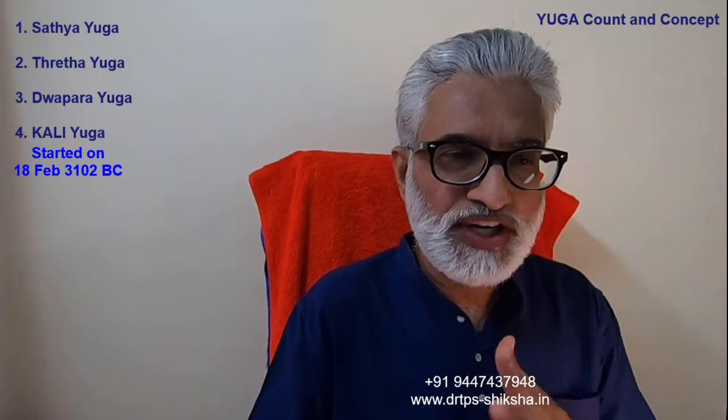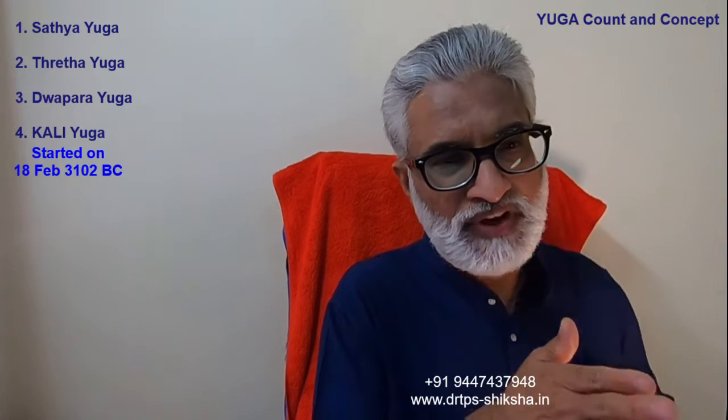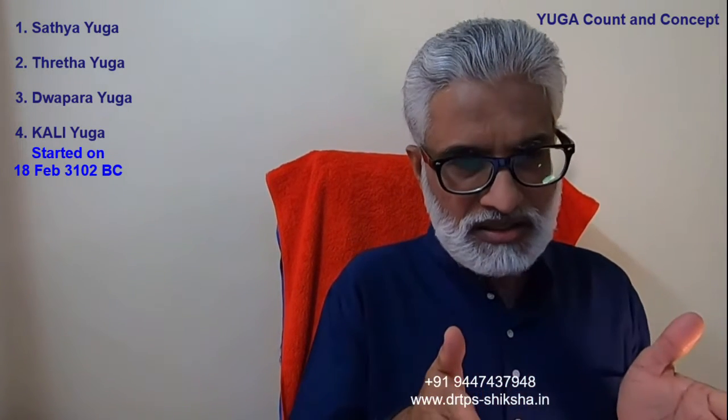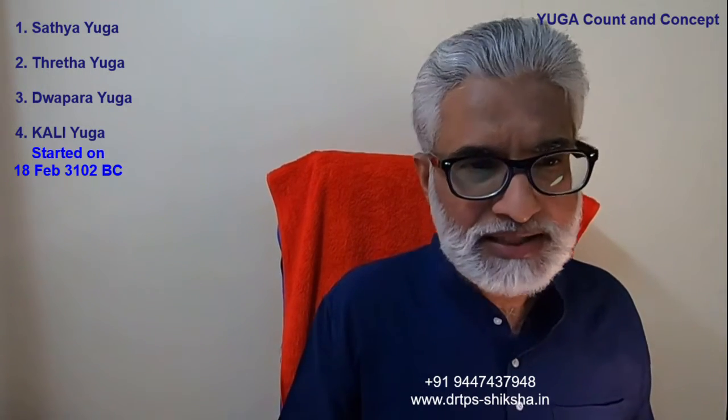That is supposed to be 18th February 3102 BC, when Krishna was 126 and a half years old. That is where the Yuga Parvi falls. So we have crossed nearly 5,000 years. About 20 to 40 days of error would have happened when we compute or adjust the Yuga with the Western calendar which we follow as January-February today. That would be the reason the February date is now falling in March and April.